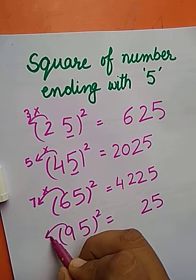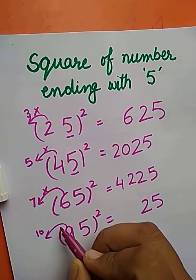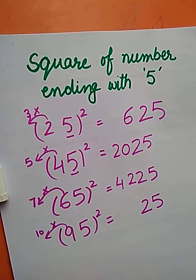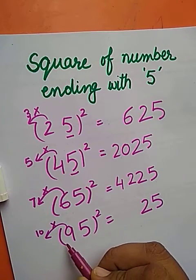We will take the product of 10 and 9. 10 times 9 is 90. So square of 95 is 9025.